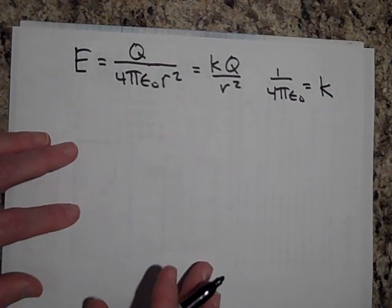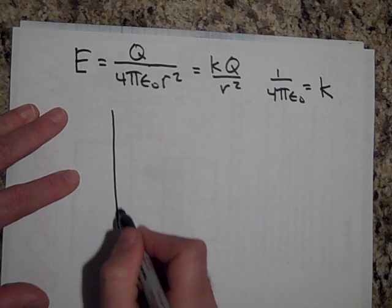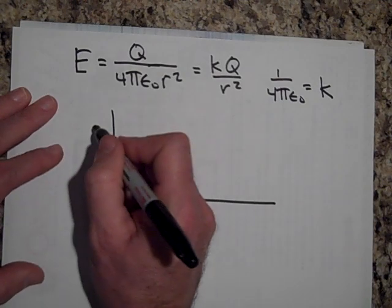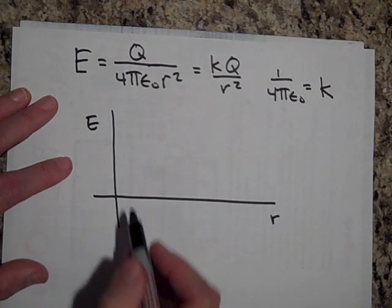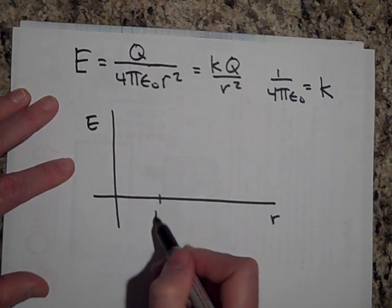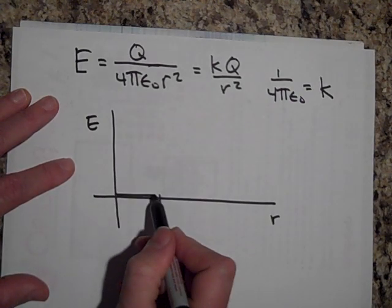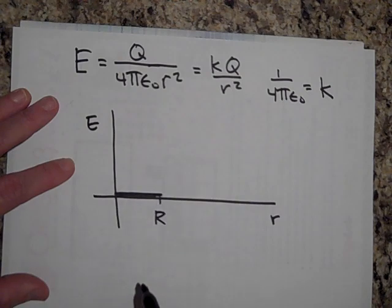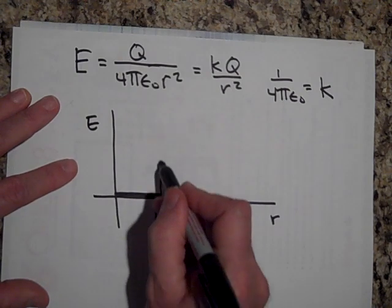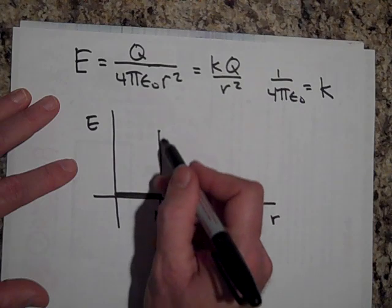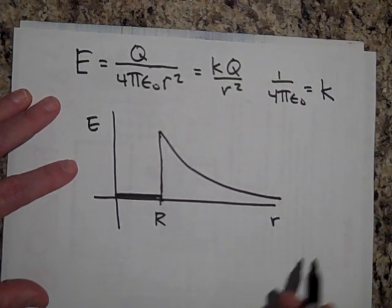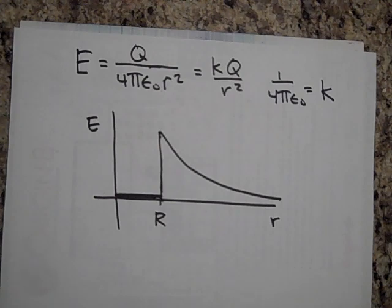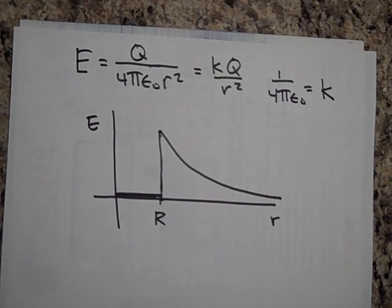If I were to graph the electric field for a sphere as you head outward: up to radius R, the field is zero. Then once you get to R — shown by a dotted vertical line — it drops off like kQ/r squared from there. So that's the electric field for a solid metal sphere.